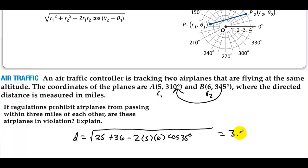So the distance is 3.443 miles, and regulations prohibit within 3 miles. Are these airplanes in violation? No. They are more than 3 miles apart.